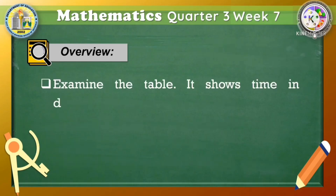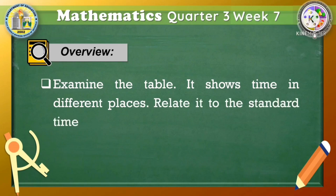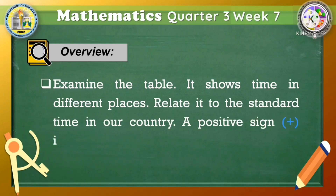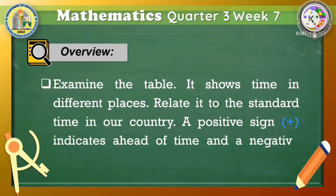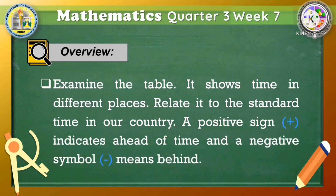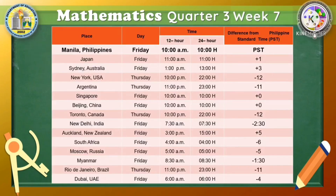Examine the table on the next slide. It shows time in different places related to the standard time in our country. A positive sign indicates ahead of time, and the negative symbol means behind. As you can see in the table, the first column reflects the place, the second column is the day of the given place, the third and fourth columns show the time in 12-hour and 24-hour clock format. The last column gives the difference of time from the Philippine Standard Time, or PST, to the time of other places. The time in Manila, Philippines in the first row is our reference.